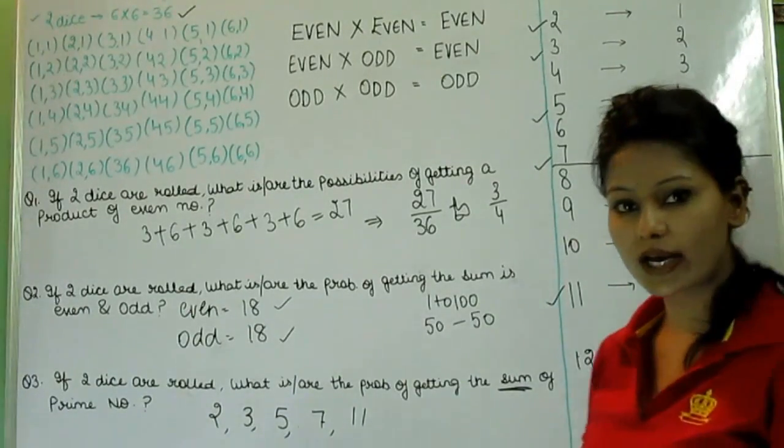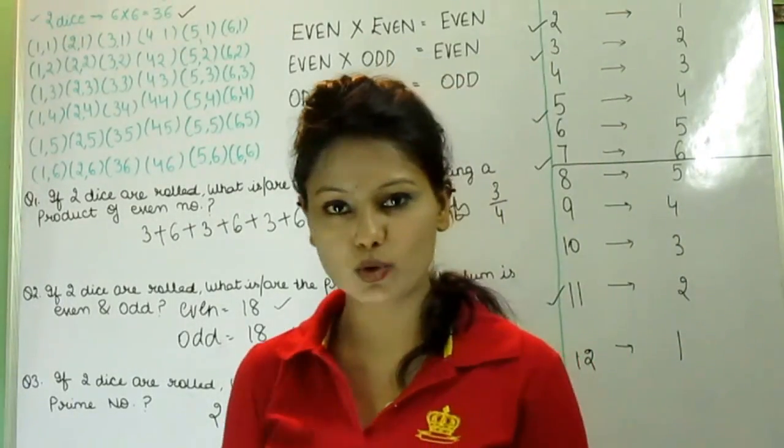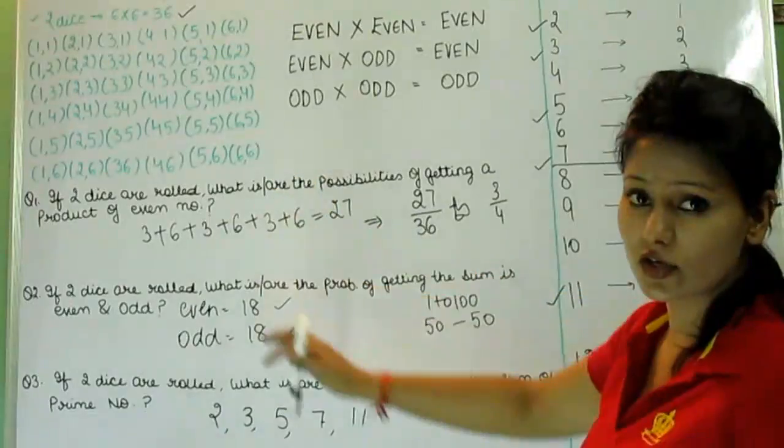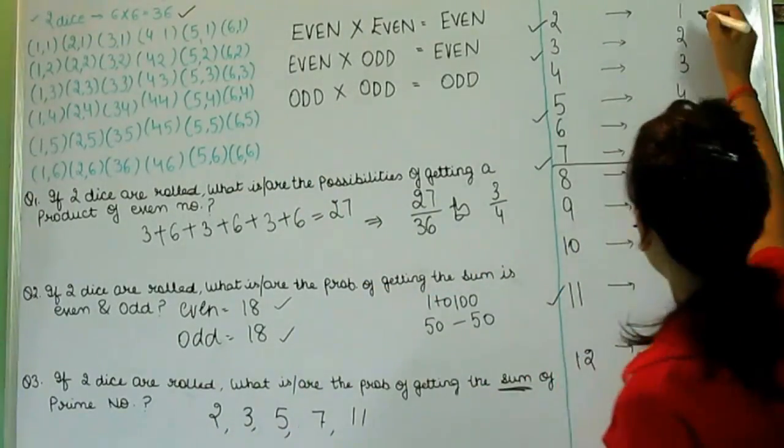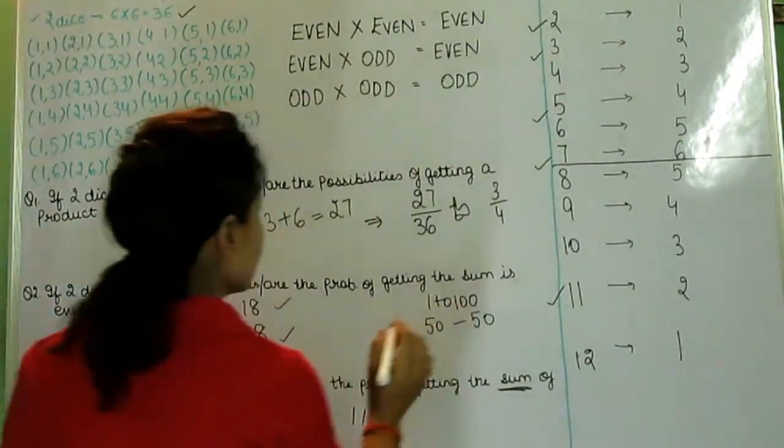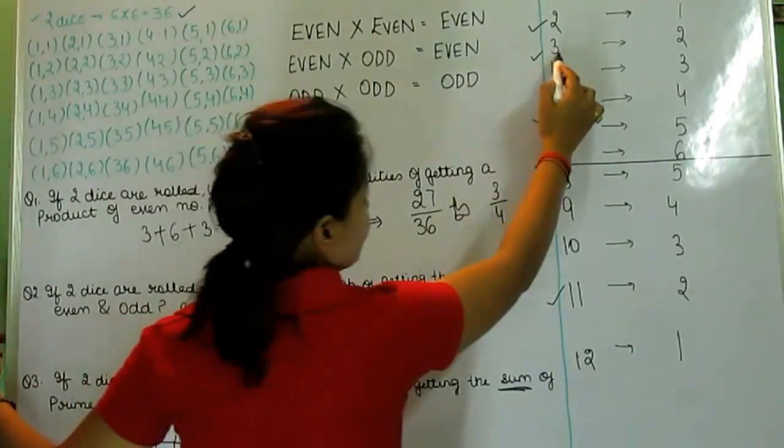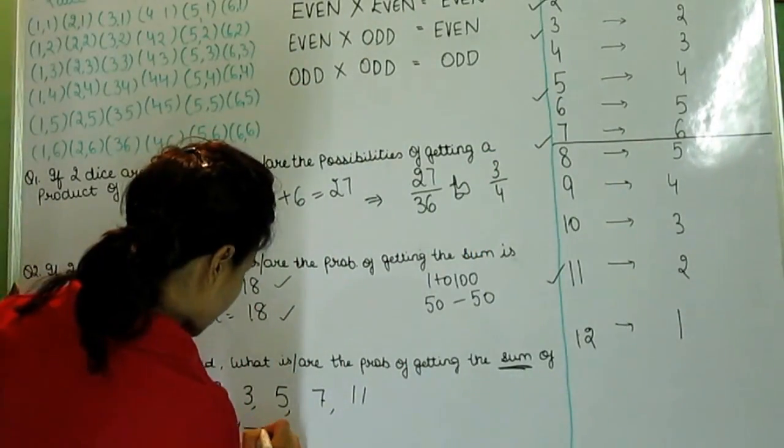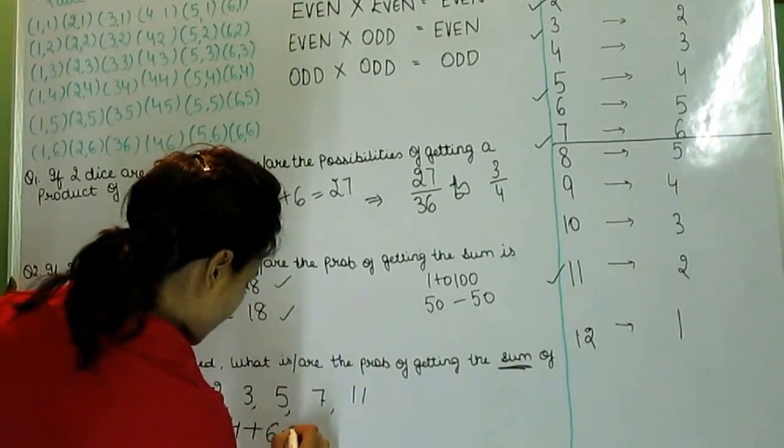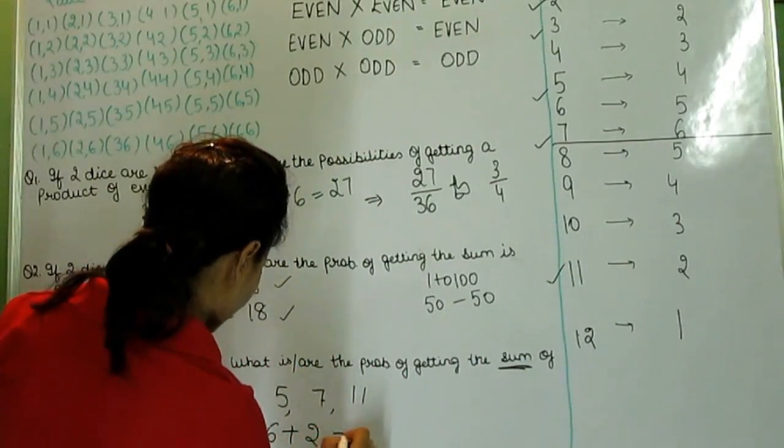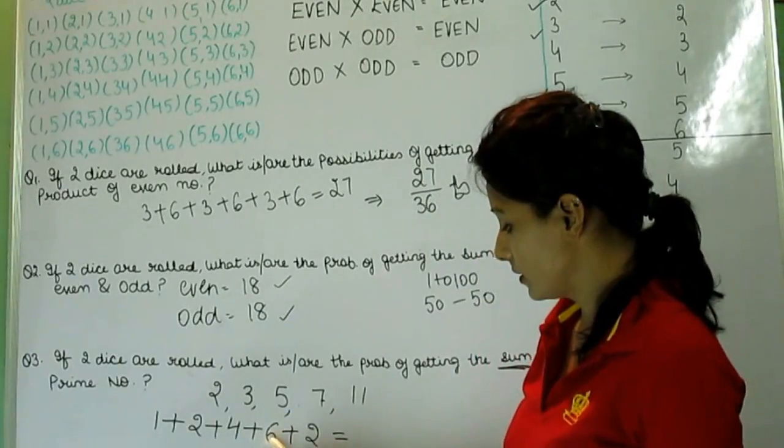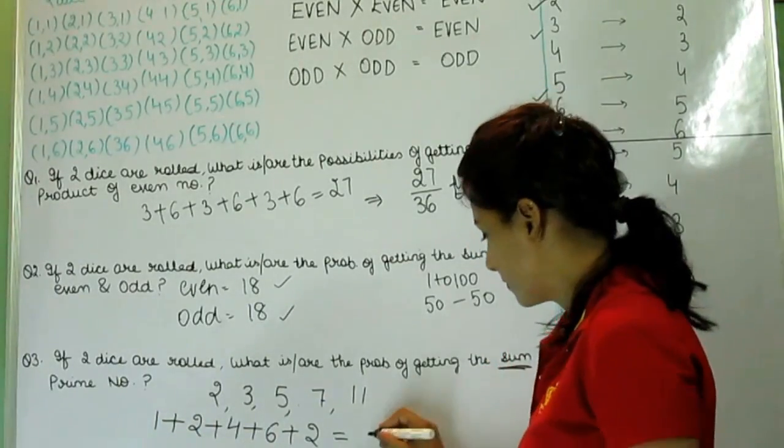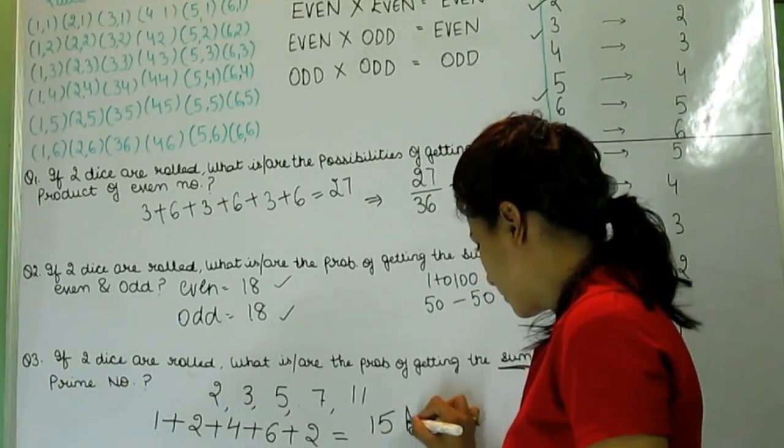So what can we tell you? We have 2 dice rollable. We have some prime numbers. We have a chart. Two, three, five, seven, eleven. If we can see the chart, thank you for taking time to watch.